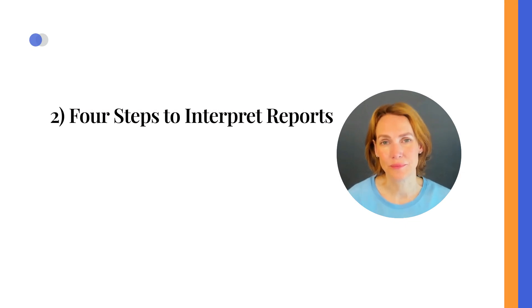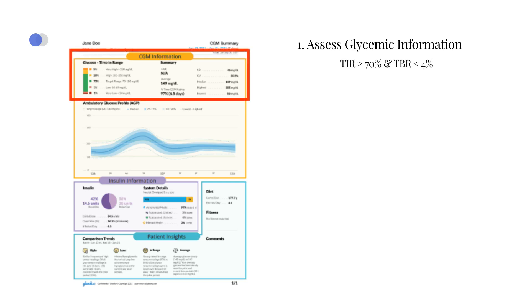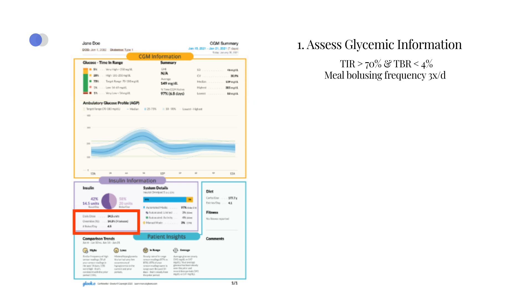Four steps to interpret reports. To effectively interpret reports from automated insulin delivery systems, it is beneficial to follow a structured approach. Step 1: Begin by evaluating if treatment goals are being met, focusing on time in range above 70% and time below range below 4% over the past 2 weeks. One important aspect is to assess the frequency of meal bolusing by the user, which is typically indicated in the summary report.